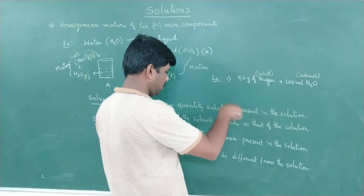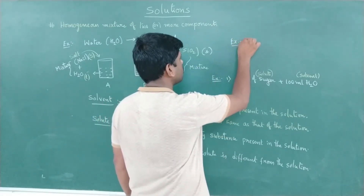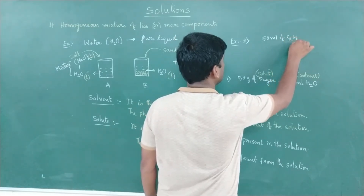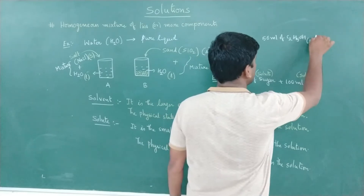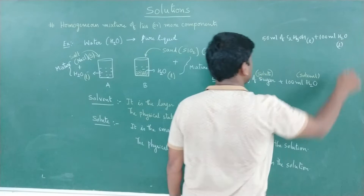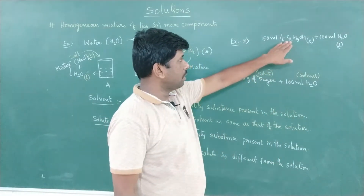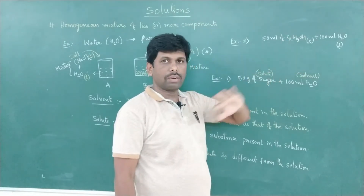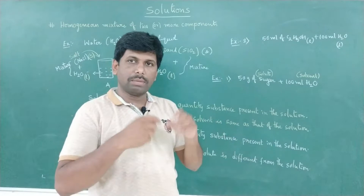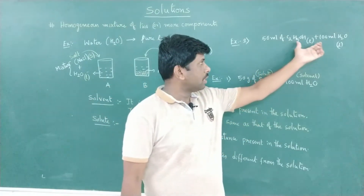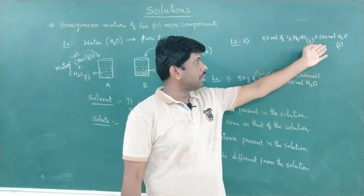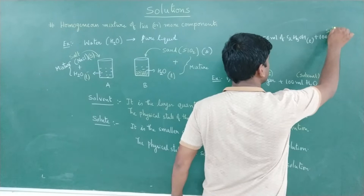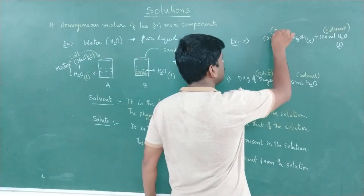The first definition (larger quantity = solvent) is applicable when both solute and solvent are present in the same physical state. For example, 50 ml of ethyl alcohol in liquid state added to 100 ml of H₂O — both are in the liquid state. We cannot distinguish them, so we identify by quantity: 100 ml water is the solvent and 50 ml ethyl alcohol is the solute.